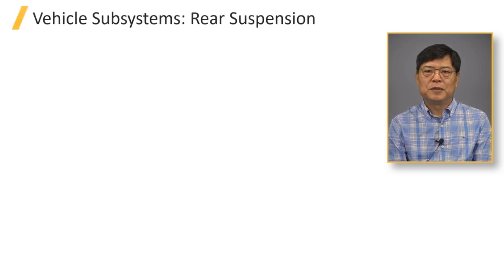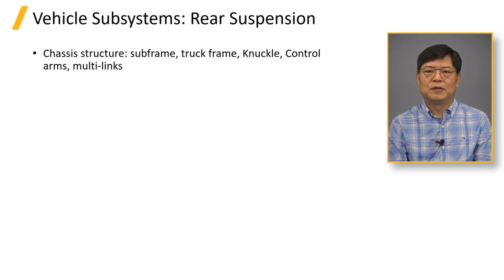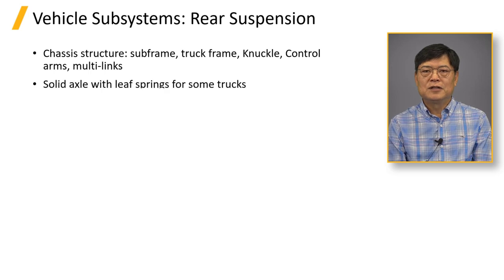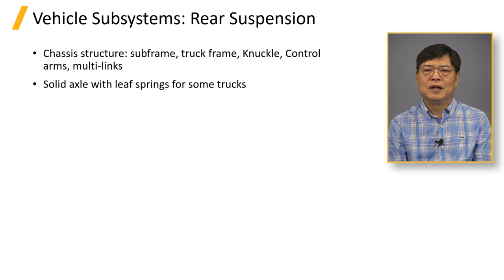The rear suspension has a subframe, which is a frame in trucks, along with a knuckle, control arms, and multi-links. Solid axle and leaf spring are used for some truck applications. A few small cars have twist-axle rear suspensions.